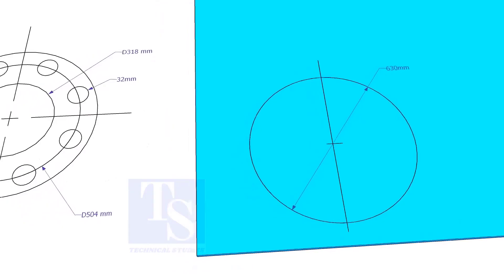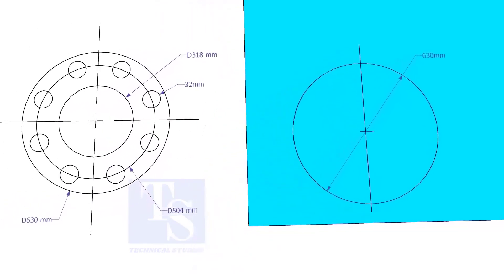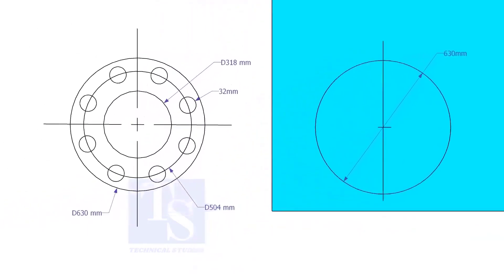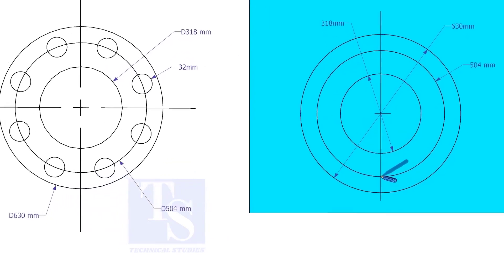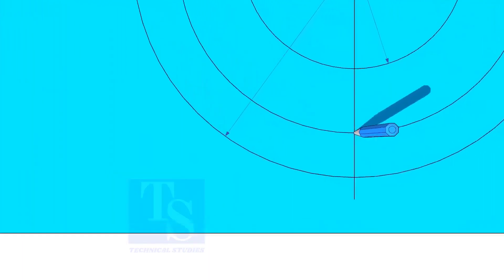Draw the OD and the ID circles. Draw the PCD. Punch mark where the PCD circle cuts the center line.